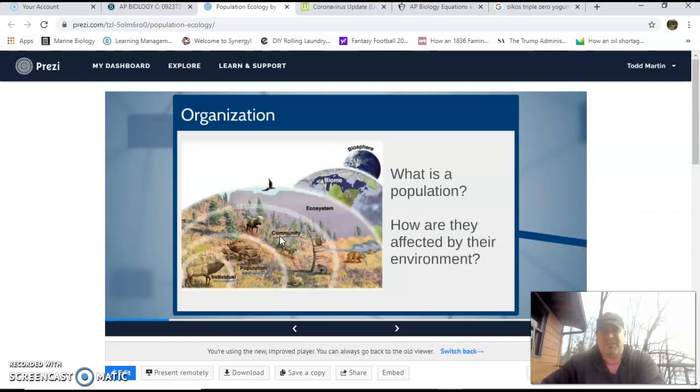Communities, when we get to the level of communities, communities are at the level where we start to consider all the non-living things that interact with the various populations in an area. So we talk about like the temperature, the amount of water available, the amount of nitrogen available, daylight hours, those types of things. So non-living factors that affect populations in area.